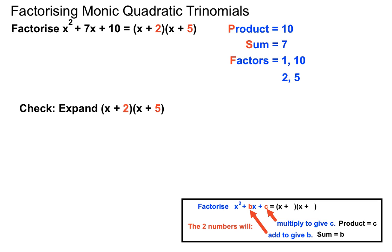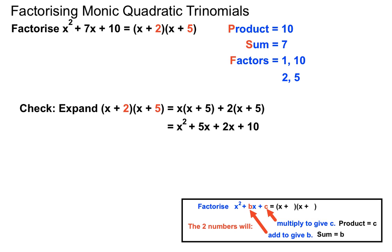We can always check our answer by expanding back out. If we expand (x + 2)(x + 5), we get x times x plus 5, plus 2 times x plus 5, which gives x squared plus 5x plus 2x plus 10. Collecting like terms gives x squared plus 7x plus 10 — back to our original expression. So if you have time at the end of a test, always expand your factors to verify you've got the right answer.